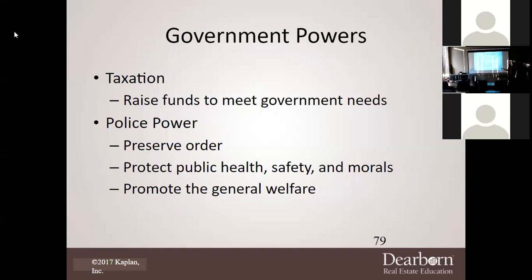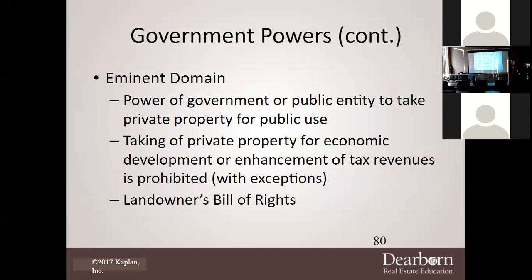If you're taking notes, write down PETE — P-E-T-E. We've covered P for Police Power and T for Taxation. The next one is E — Eminent Domain. This is where the government or a public entity can come in and take personal or private property for public use. For example, if a house happens to be right in the middle of a planned expressway, they can take it through eminent domain.